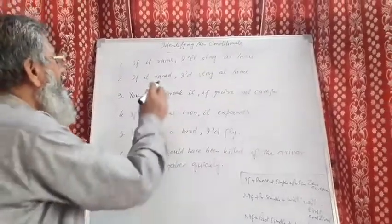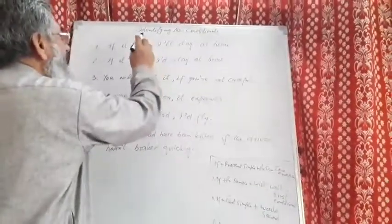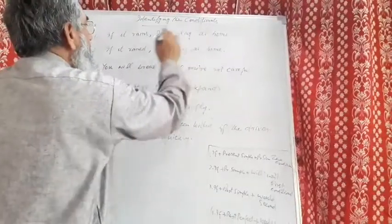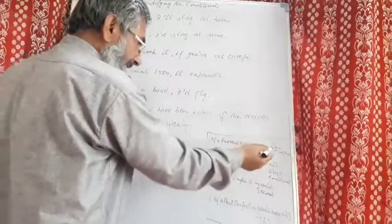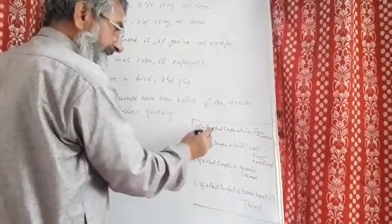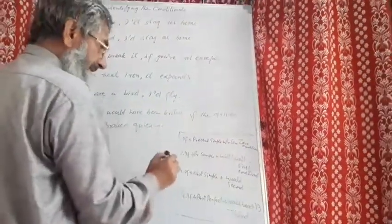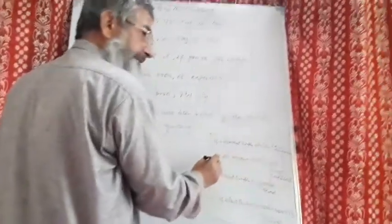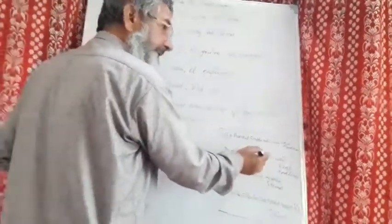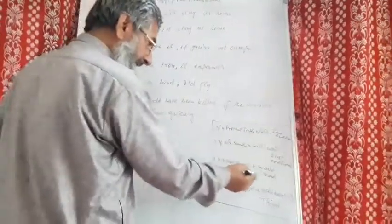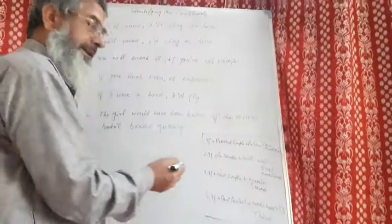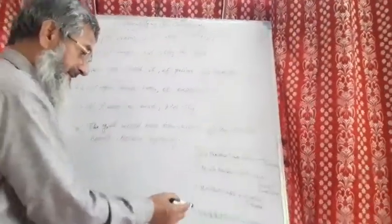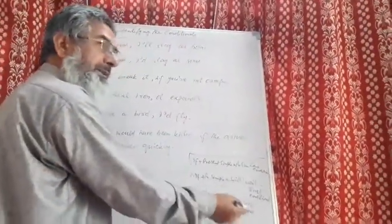Now we will have an exercise where we shall try to identify the different conditionals. Remember: in case of zero conditional, we have if plus present simple, plus present simple. In case of first conditional, we have if plus present simple, plus will or won't. In case of second conditional, we have if plus past simple, plus would. And in case of third conditional, we have if plus past perfect, plus would have, plus past participle.